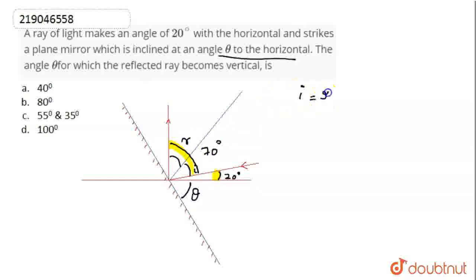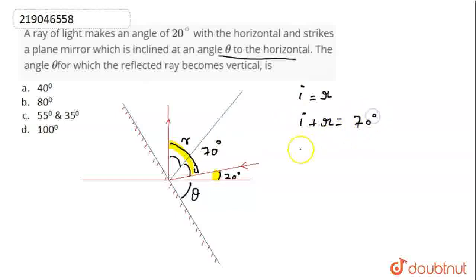The sum of the incident angle plus the reflected angle is 70 degrees. So we can find the incident angle, which is 35 degrees, which is equal to the reflected angle — also 35 degrees.